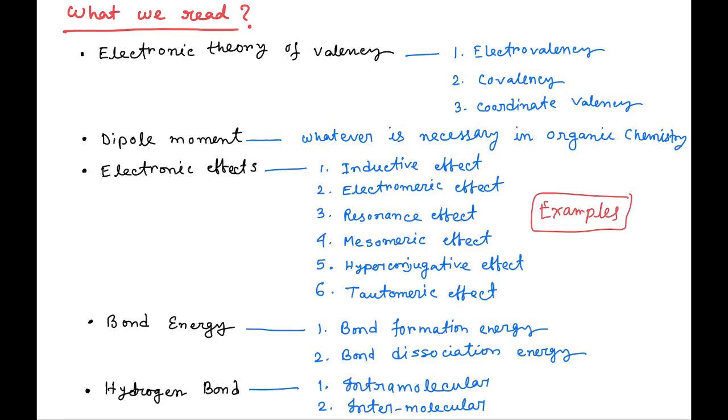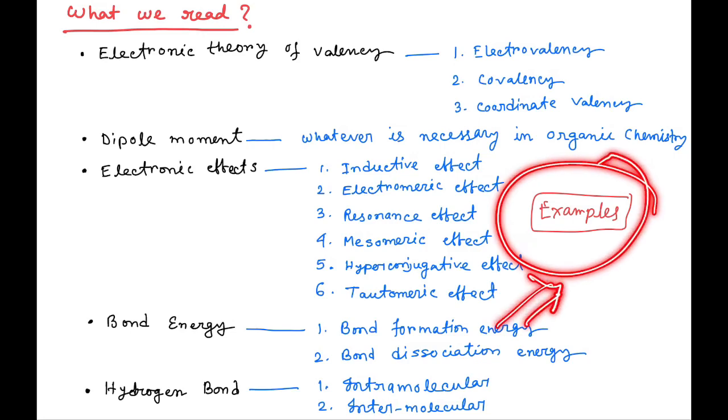Then we will see bond energy. Bond energy has two types: one is bond formation energy and two is bond dissociation energy. Then we will learn about hydrogen bonds in organic chemistry - two types: intermolecular and intramolecular. We will discuss that and its applications in organic chemistry as well.